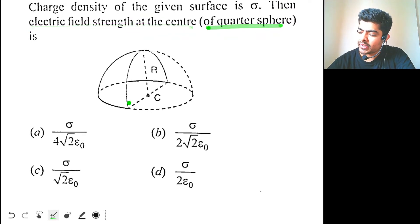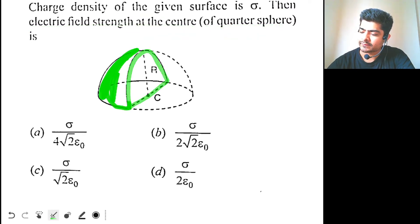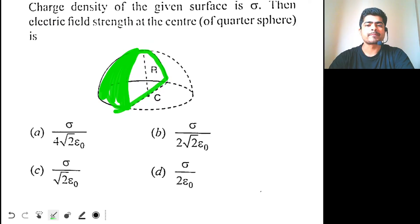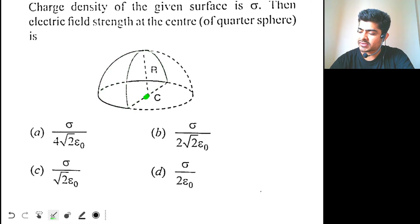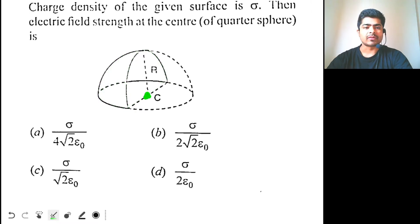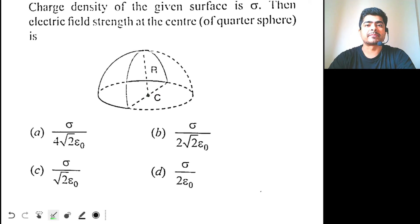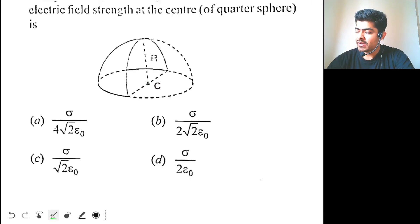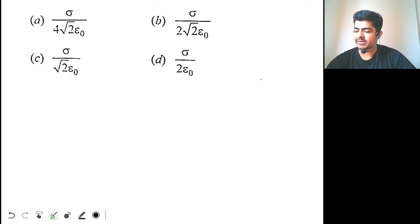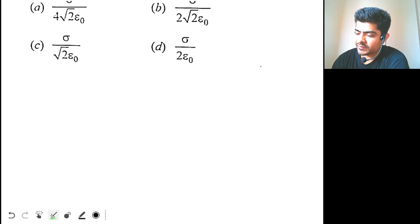Here you can see we have a quarter sphere. You have to find the electric field due to this charge at the center of the sphere. Charge density is given to be sigma. Now how to solve this question? Let's understand this first.